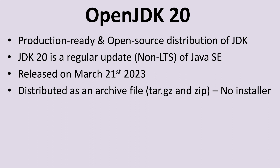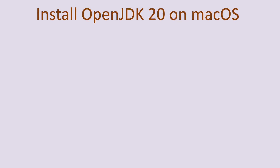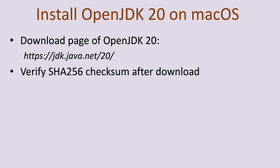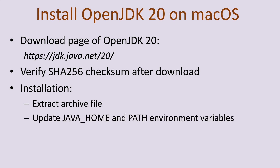Note that there is no installer or program for OpenJDK 20 for macOS. To install OpenJDK 20 on macOS, firstly you need to download the binary distribution from its official download page at the URL jdk.java.net/20. It is strongly recommended to verify the SHA256 checksum after downloading. The installation is quite simple — just extract the archive file and update the JAVA_HOME and PATH environment variables.